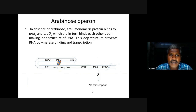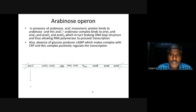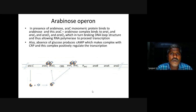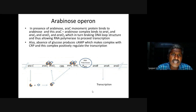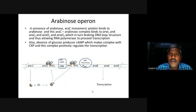In presence of arabinose, RA-C monomeric protein binds to arabinose and this RA-C-arabinose complex binds to RA-I1, RA-I2, RA-O1 and RA-O2, which in turn breaks the DNA loop structure, thus allowing RNA polymerase to proceed with transcription. Also, absence of glucose produces cyclic AMP which makes a complex with CRP, and this complex positively regulates the transcription.